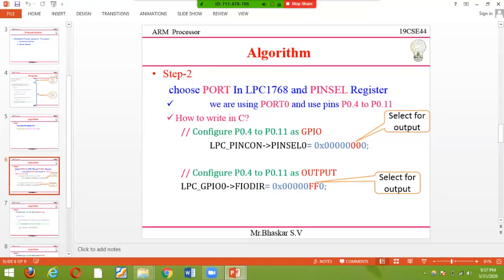For the direction register in GPIO, there's one more special register, FIO. If you configure it as 0xFFF, it acts as output. If it's 0x00, it acts as input. Since we are connected to CRO, it should be configured as output.